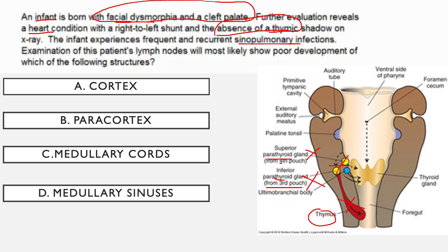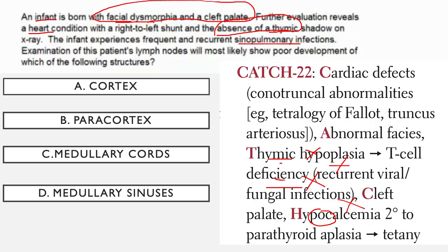You can remember this whole constellation with the mnemonic CATCH-22 from First Aid: Cardiac defects, Abnormal facies, Thymic hypoplasia — represented here by the absence of a thymic shadow — Cleft palate, and Hypocalcemia secondary to parathyroid aplasia, because the parathyroids come from the third and fourth pouches as well. If you find all these symptoms together, this must be DiGeorge syndrome.